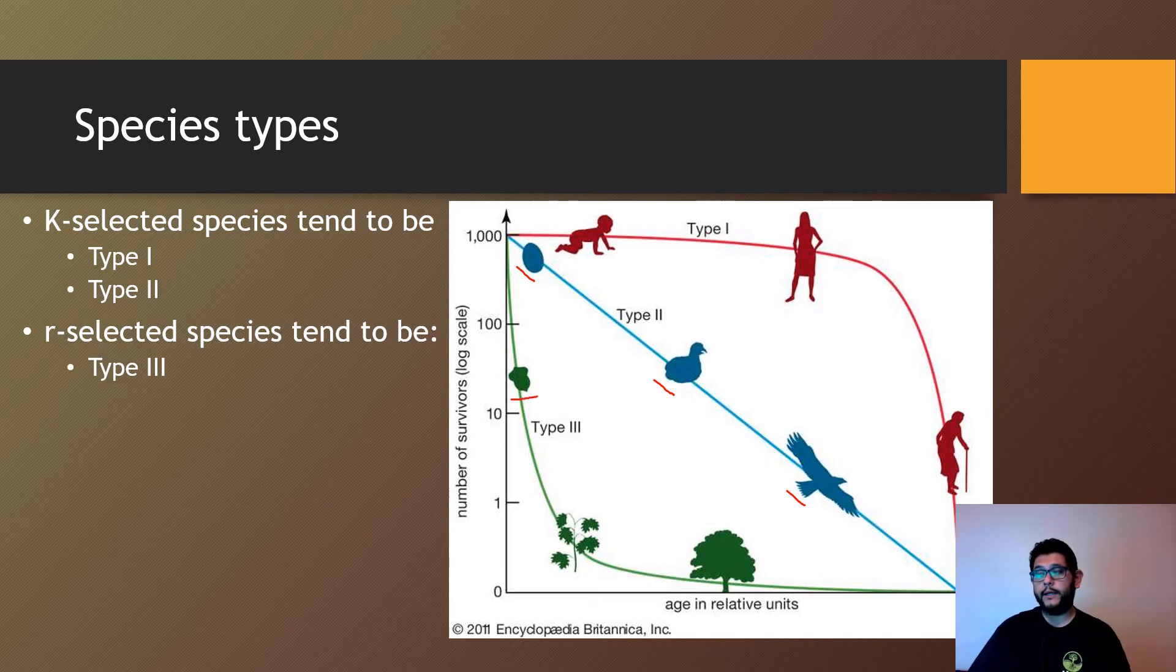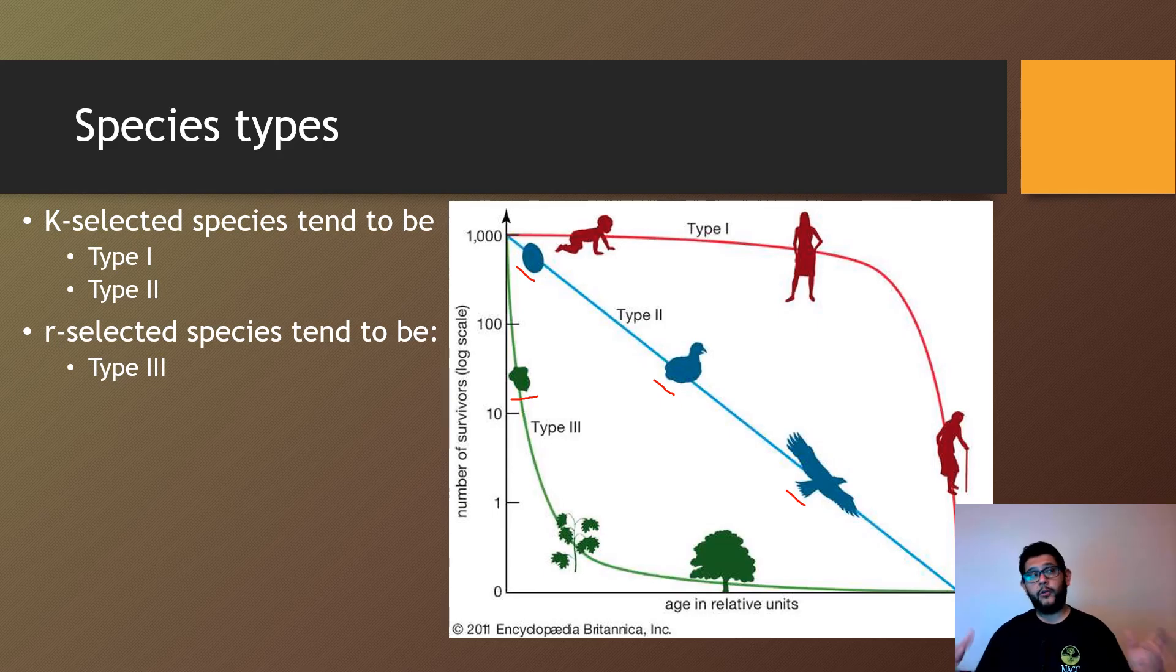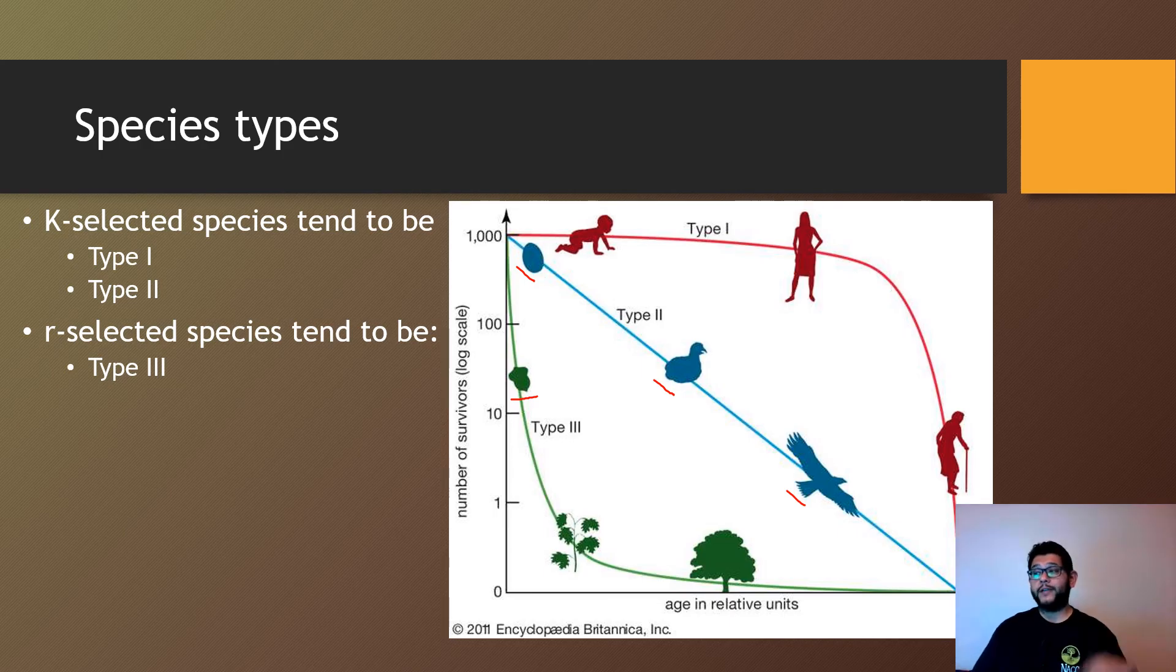And then you can have Type III. So think about like the acorns of a tree. Trees will release tons of acorns. A few of them might grow right under the tree. A few of them might get caught by an animal and taken somewhere else. And very few will actually make it to that old age to be the big trees that they see.